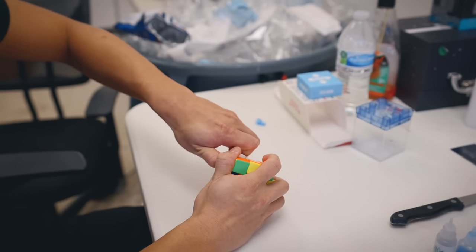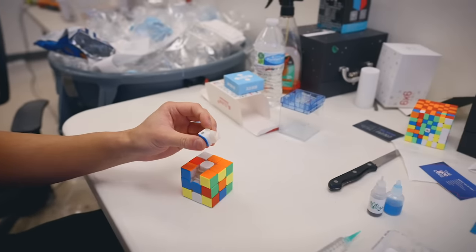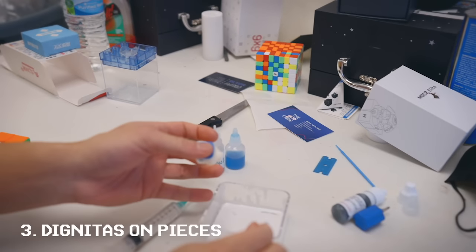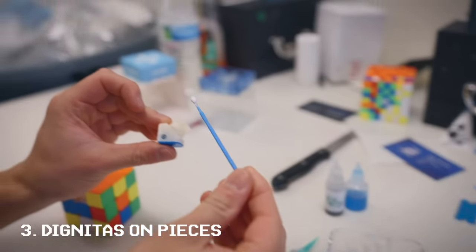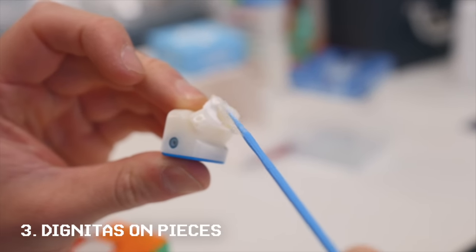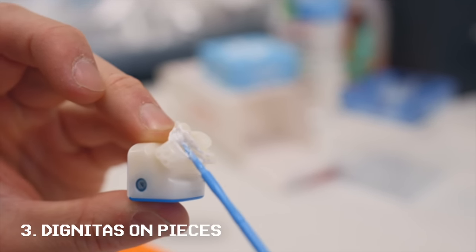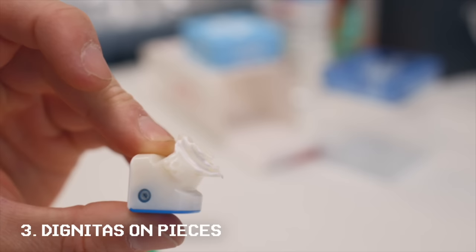So we're going to take this piece out. So it's a bunch of taking pieces out and re-adding lube. Yep. So then we're going to now... Yeah, let's show the amount. Coat the piece like this, just in the groove again.